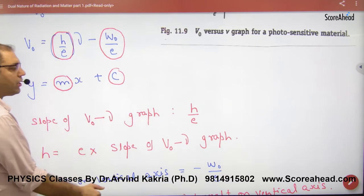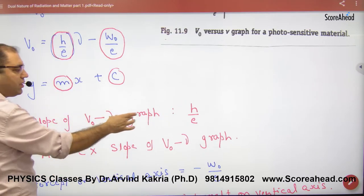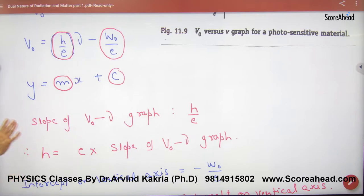What will it be? h equals the slope of V₀ frequency graph times e. So you will have Planck's constant.